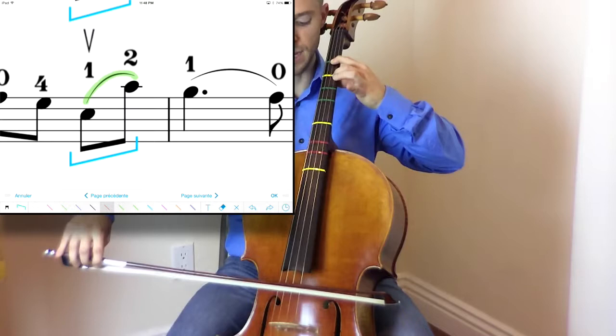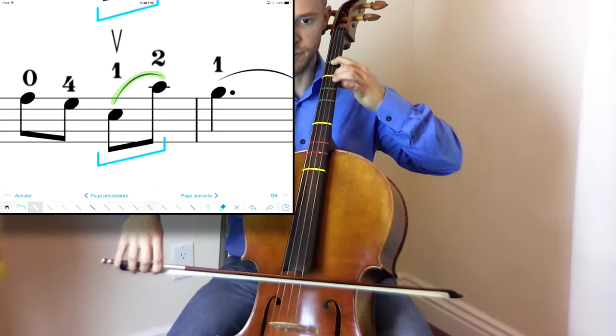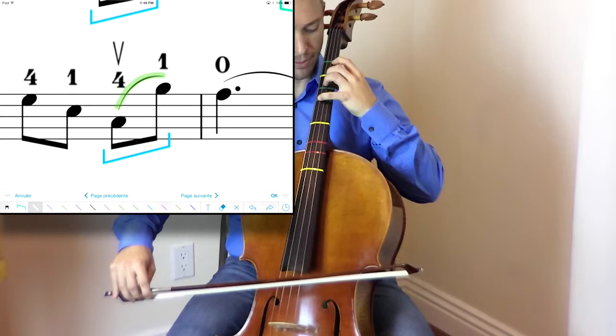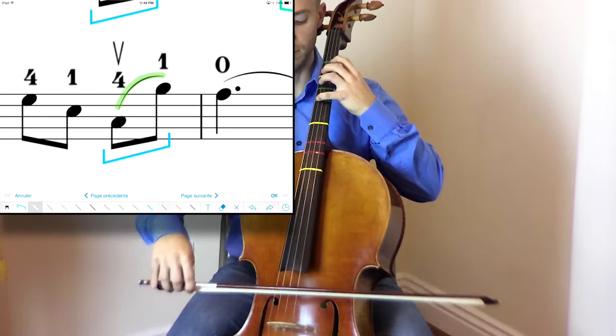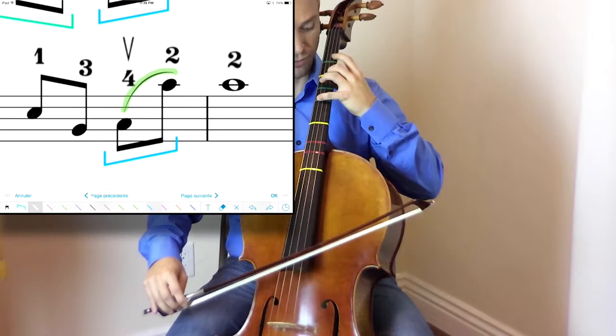Measure thirteen. One, two. Plant them down. Hop. A little space again. Up. Measure fourteen. Four, one. Try to keep them down if you can't. It's okay. Have your one ready. Hop the bow over that open D. Hop. Again, four.